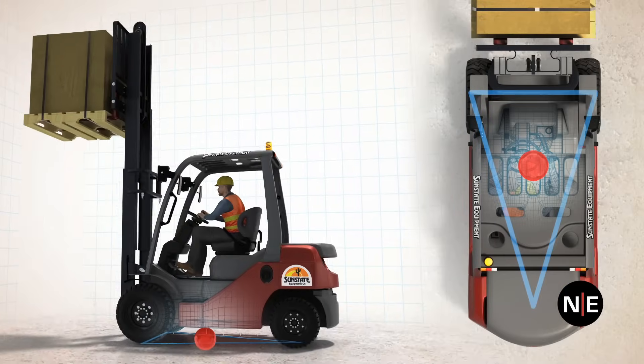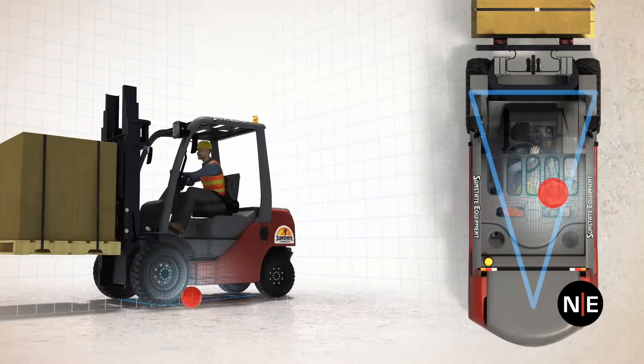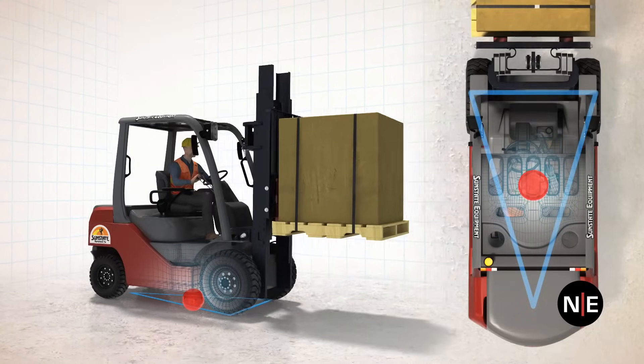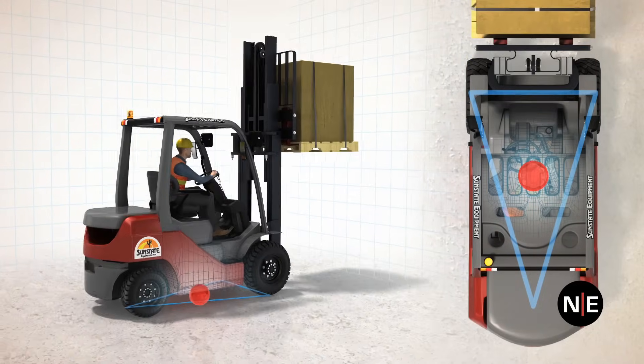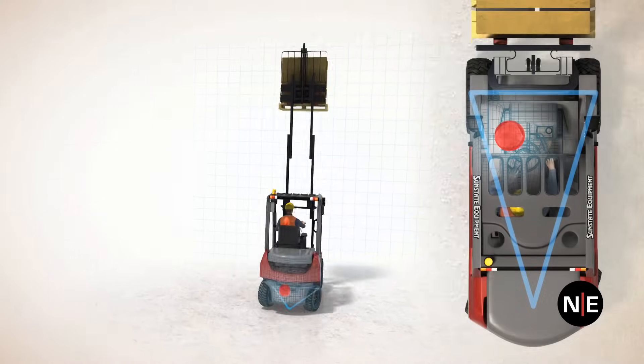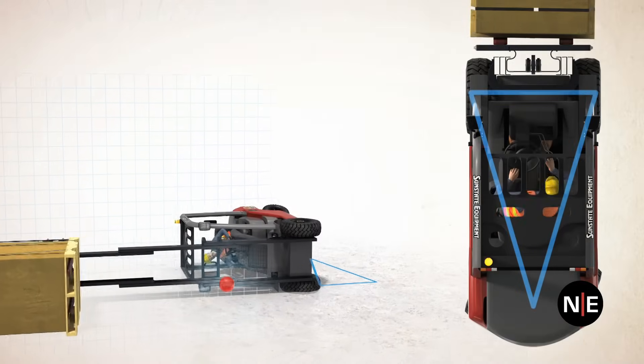As you raise and lower loads, make quick turns, and tilt the mast, the center of gravity shifts inside the stability triangle. The center of gravity must remain inside this triangle or the forklift will turn over.